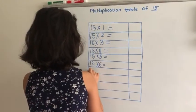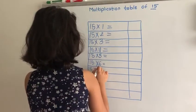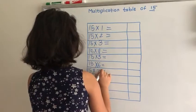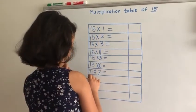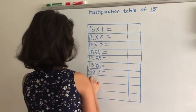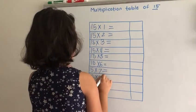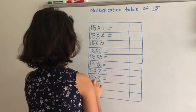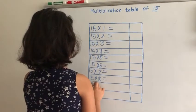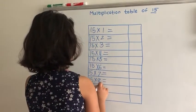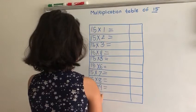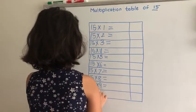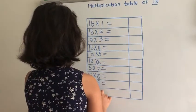15 times 7 equals, 15 times 8 equals, 15 times 9 equals, 15 times 10 equals